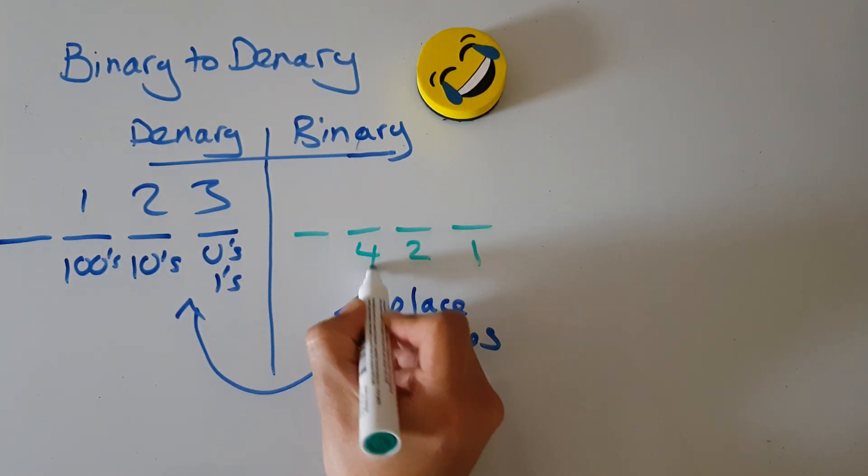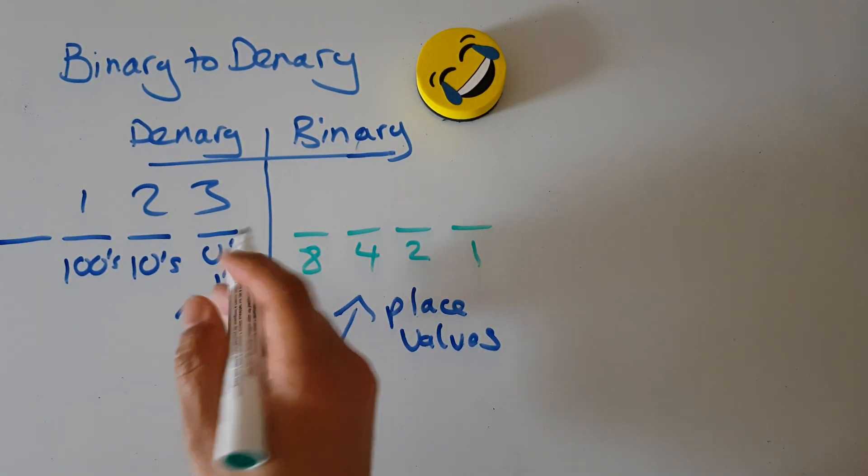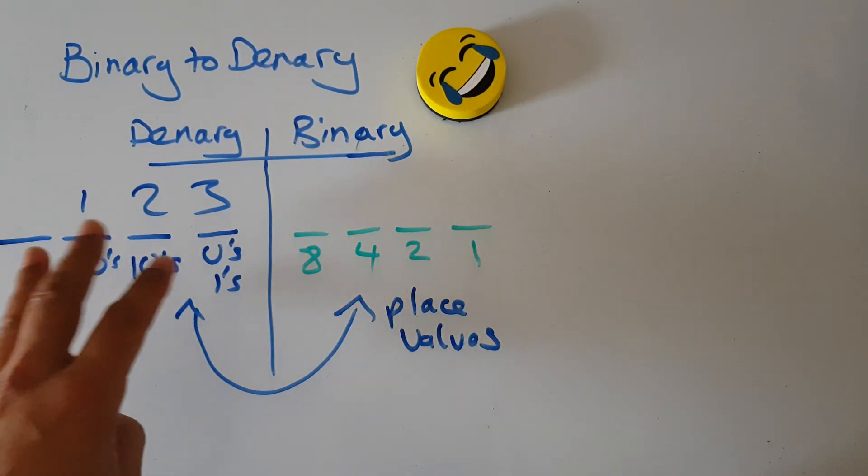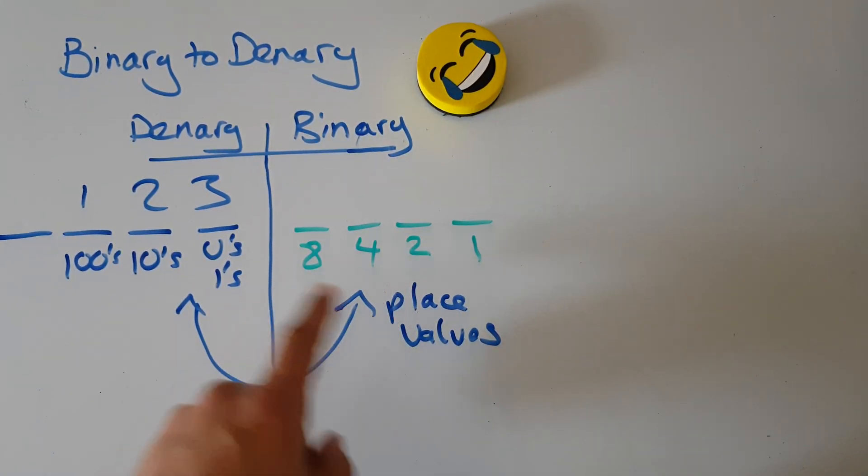Then we double that and we have 8, and then we double that, and so on. So like with denary, it's a very simple system - you just double the place value each time, starting with 1.